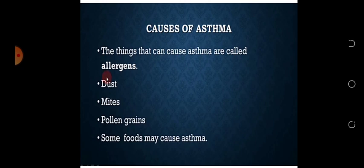Asthma کے causes کیا ہیں؟ وہ چیزیں جن کی وجہ سے asthma ہوتا ہے انہیں allergens کہتے ہیں۔ The things that can cause asthma are called allergens. Asthmatic patient کو کچھ چیزوں سے allergy ہوتی ہے جن میں dust شامل ہے، mites شامل ہیں - mites چھوٹے چھوٹے arthropods یعنی کیڑے ہیں - اور ان سے بھی allergy ہو سکتی ہے۔